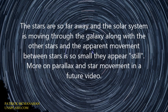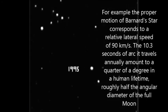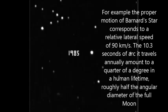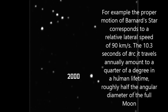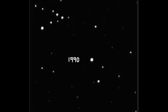The stars are so far away and the solar system is moving through the galaxy along with the other stars, and the apparent movement between stars is so small that they appear still. For example, the proper motion of Barnard's Star corresponds to a relative lateral speed of 90 km/s. The 10.3 seconds of arc it travels annually amounts to a quarter of a degree in a human lifetime, roughly half the angular diameter of a full moon.